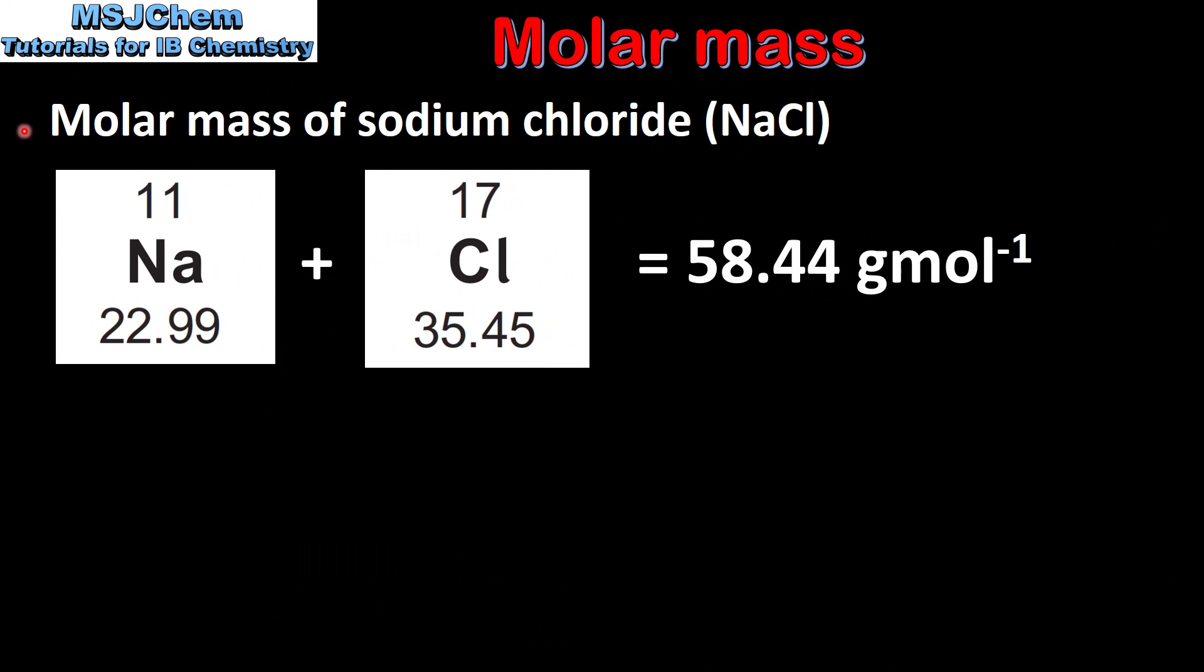Next we'll calculate the molar mass of sodium chloride. A formula unit of sodium chloride consists of one sodium ion and one chloride ion. Therefore to find the molar mass we add the relative atomic masses of sodium and chlorine, which gives us a molar mass of 58.44 grams per mole.